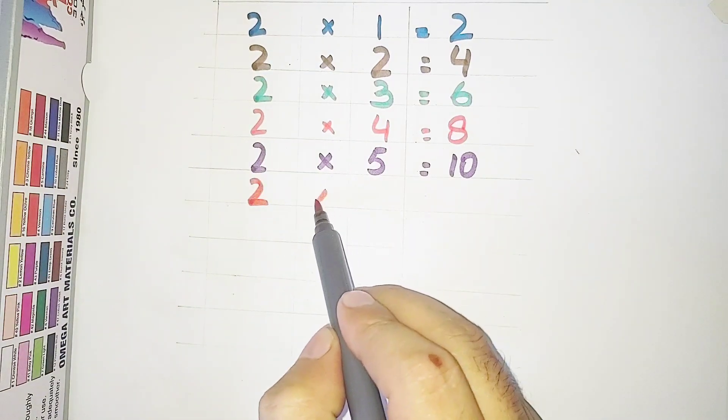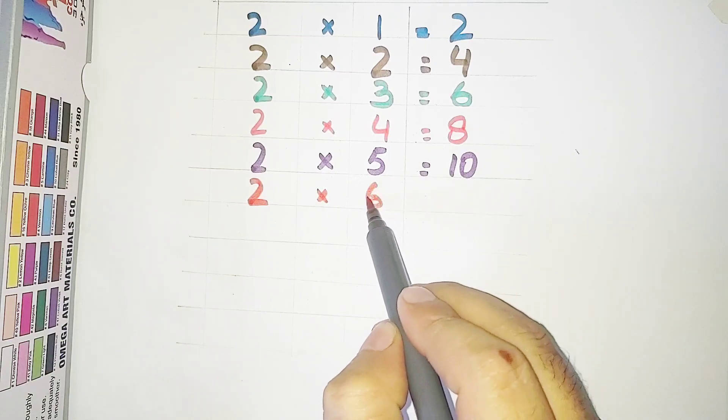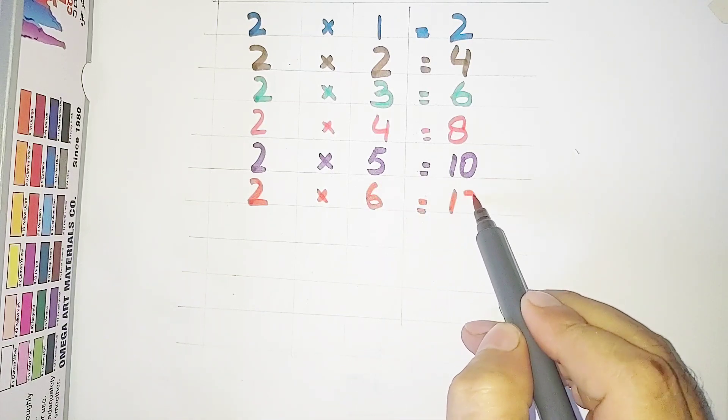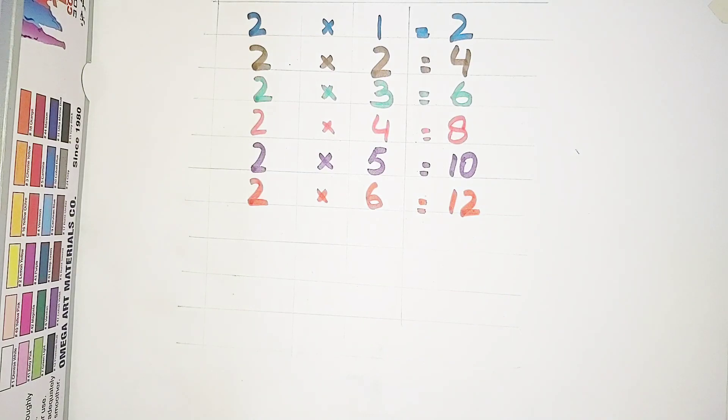2 multiplied by 6 is equal to 12. 2 sixes are 12.